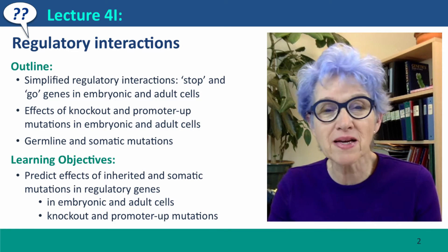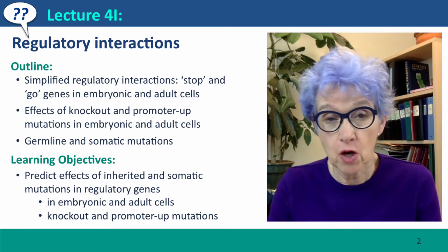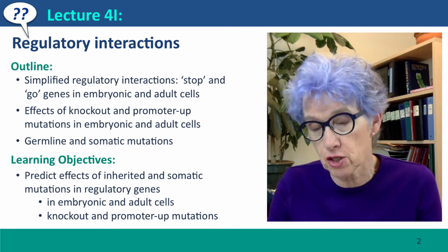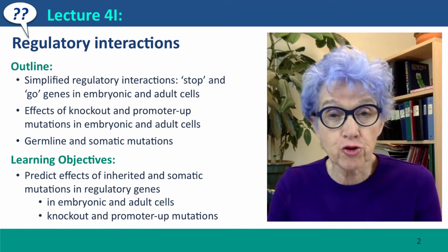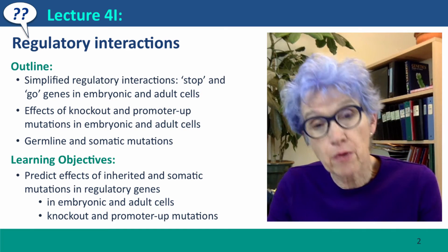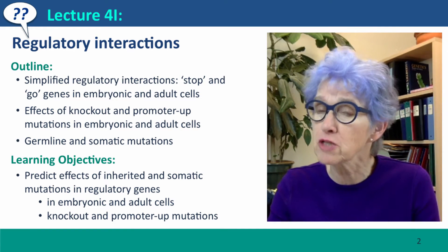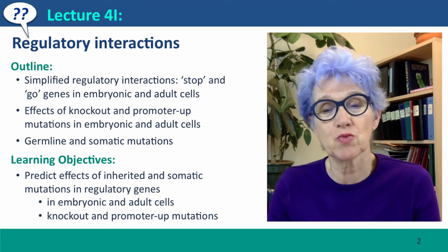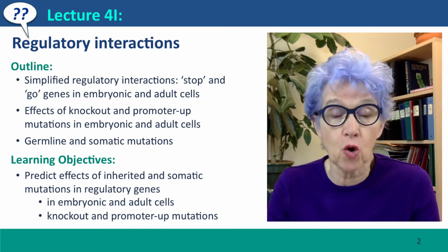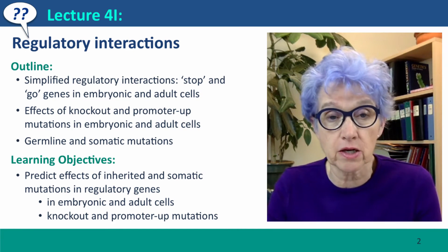Hi, everyone. Welcome back. This is lecture 4i of Useful Genetics, where we're extending our thinking about genetic interactions between different loci to thinking about interactions involving regulatory genes. We're going to consider a simplified situation that exemplifies most of the key issues we need to think about — genes that we're just going to call stop and go, that control cell growth in embryonic and adult cells.